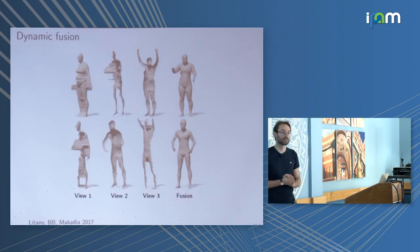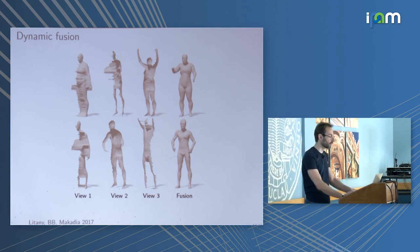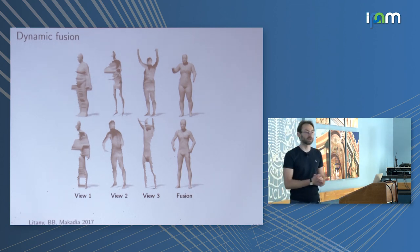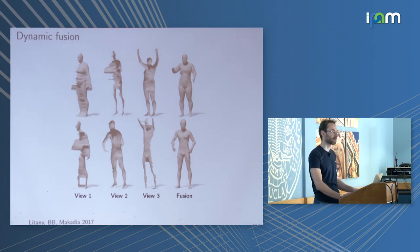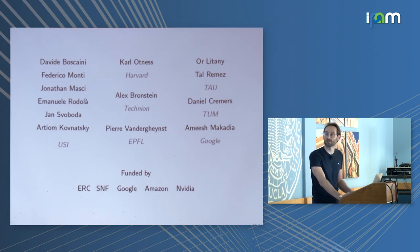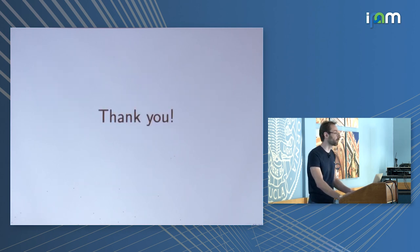Finally, we can do dynamic fusion: given multiple views and deformations of the shape, we fit the model to each and average them in the latent space, producing a reconstruction of better overall quality than from a single input. I would like to mention my numerous collaborators on these projects and different funding sources. Thank you for your attention.